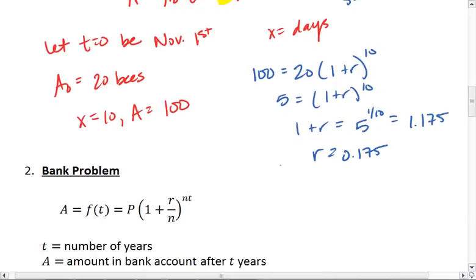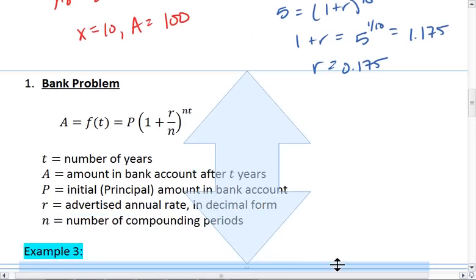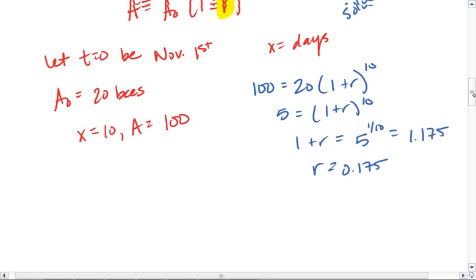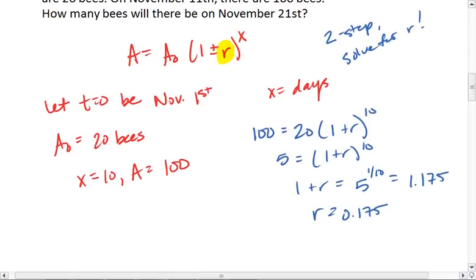This means the bees are increasing by 17.5% every day. That was part 1.